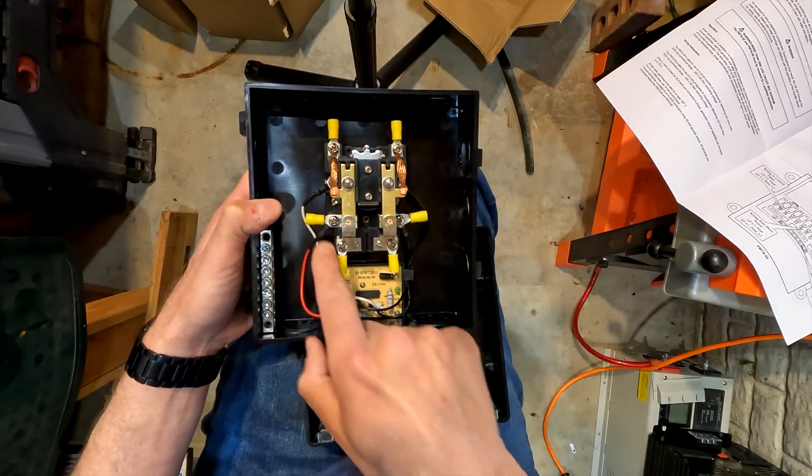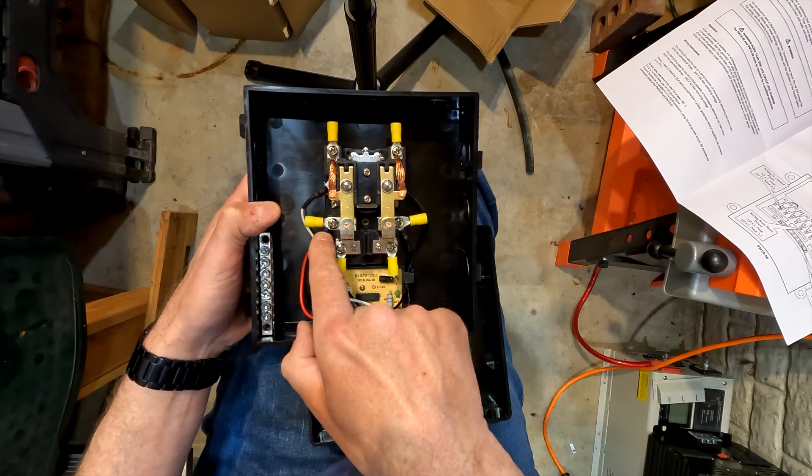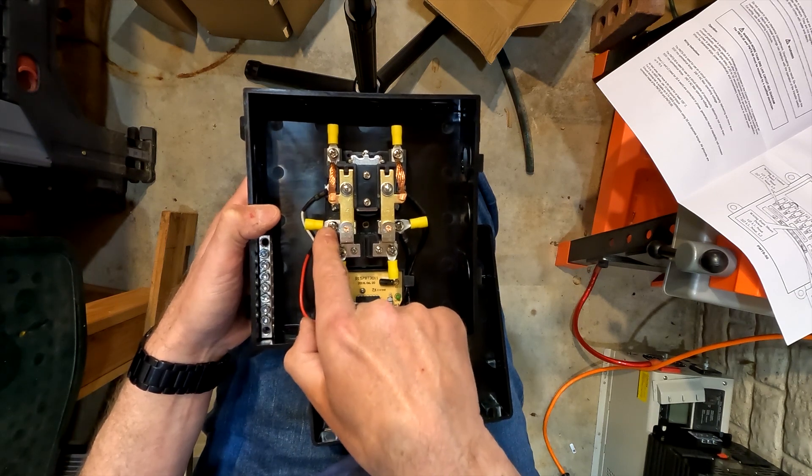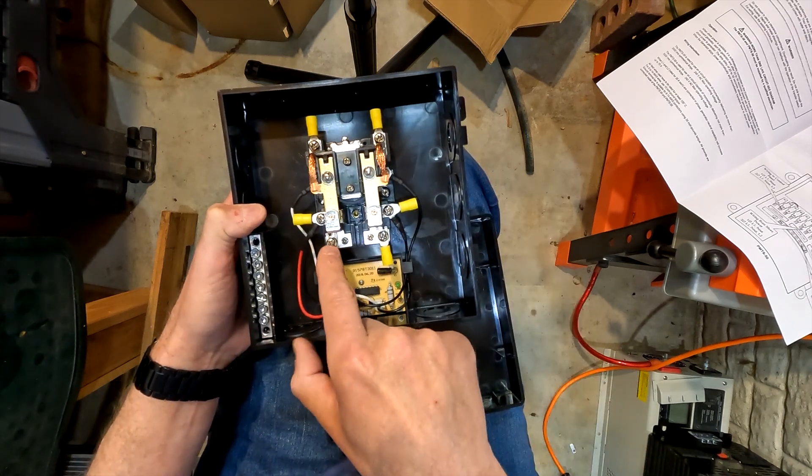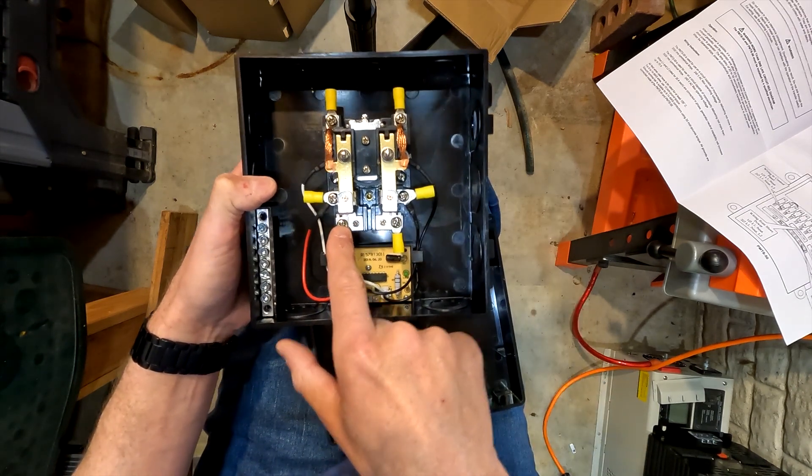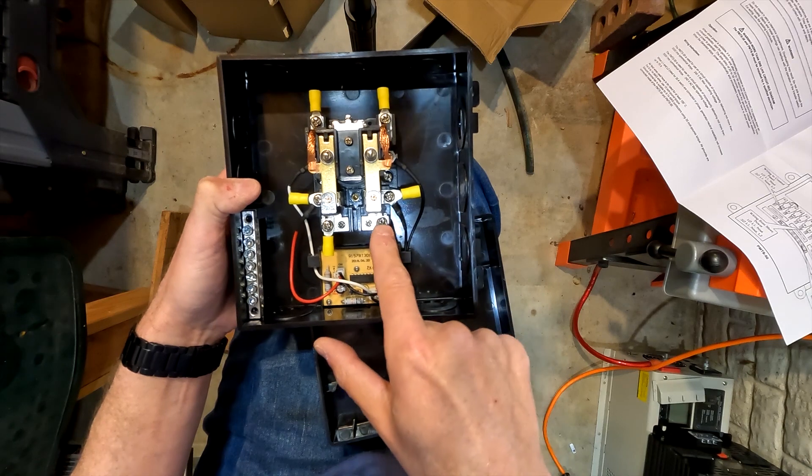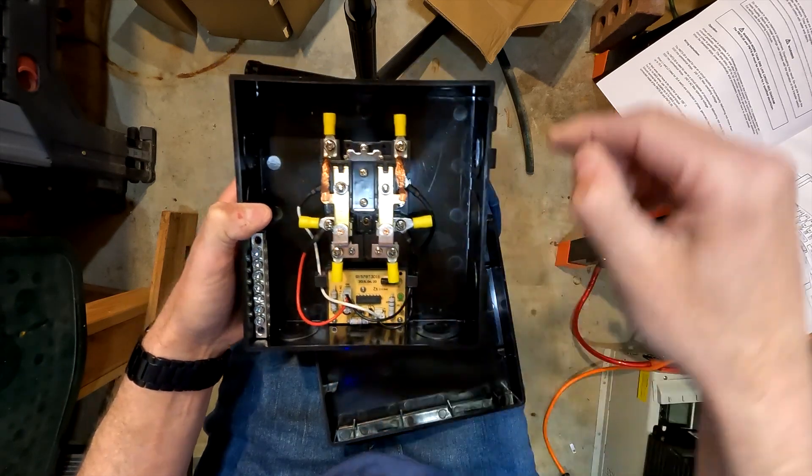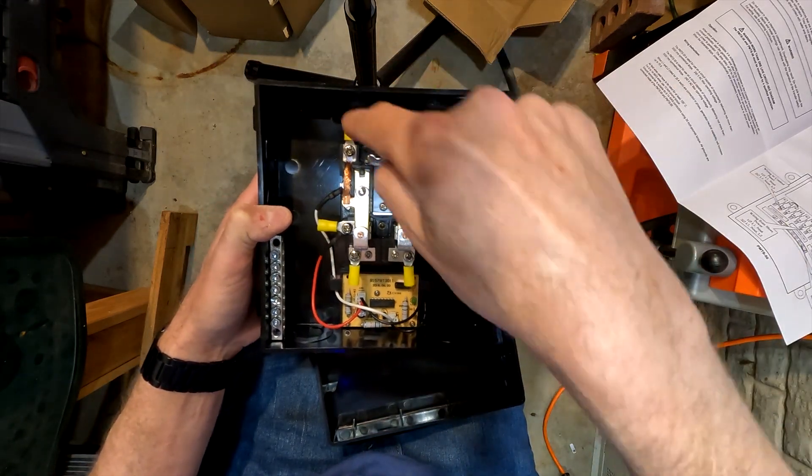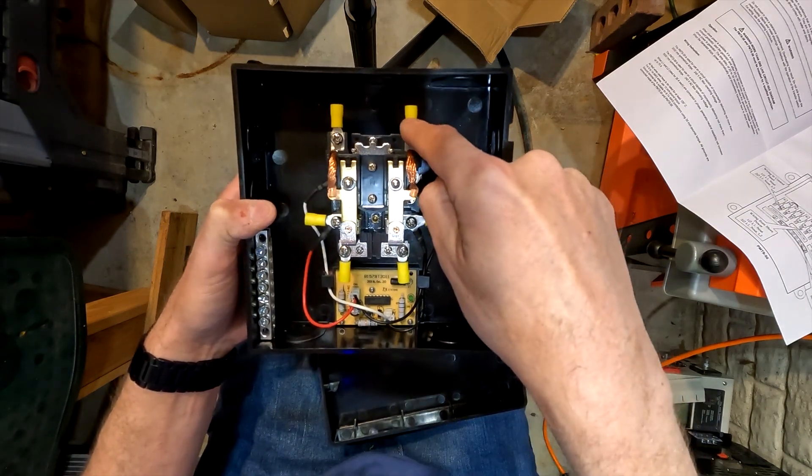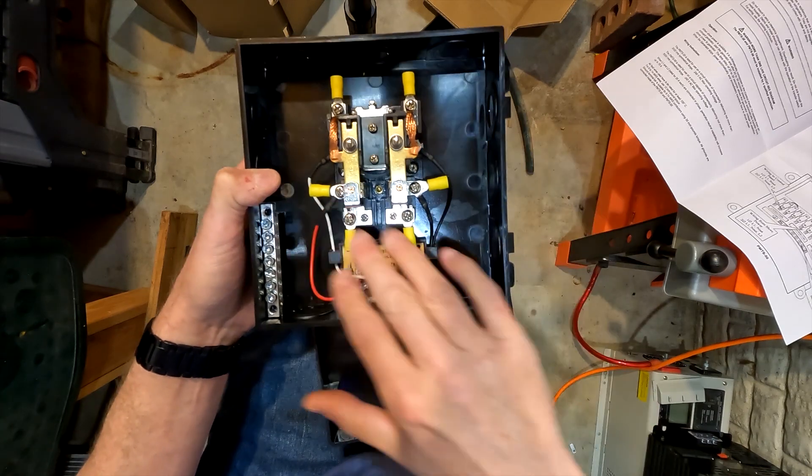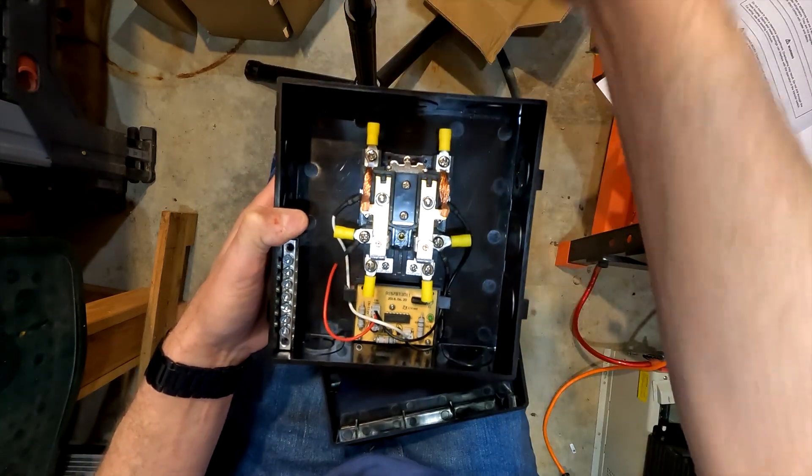The way it looks is the hot from my solar is going to go here and the neutral is going to go here. The hot from my house is going to go here and the neutral here. These are the two outs right here: this is the line or the hot out, and this is the neutral out.